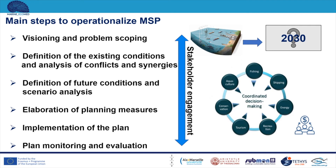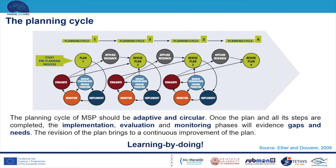Finally, the phase of monitoring and evaluation of the plan is the one that allows the evaluation of the effectiveness and performance of the plan, leading to an adaptive management process. The planning cycle should be adaptive and circular. This means that the identification of adequate indicators that should be continuously monitored is fundamental, to provide managers and stakeholders with indications of the progress achieved to reach the management goals. This phase consists of assessing the state of the system that is managed and measuring the performance of the management measures. The revision of the plan brings to a continuous improvement through the application of a learning-by-doing approach.